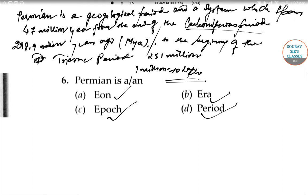After Carboniferous period MYA, the beginning of the Triassic period is 251 million years ago. So this was the last period of that Paleozoic era. So you have to mention that it is the last period of the Paleozoic era which was existing at that point of time.